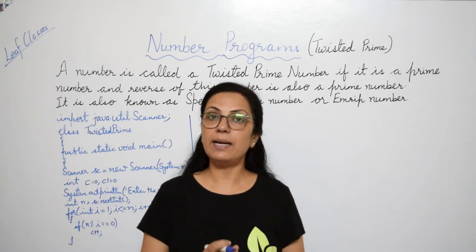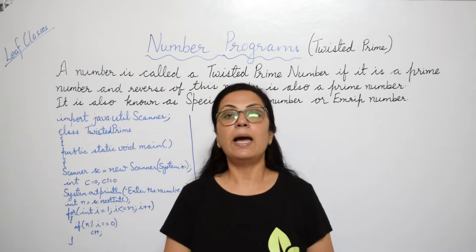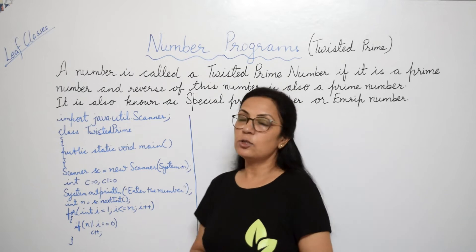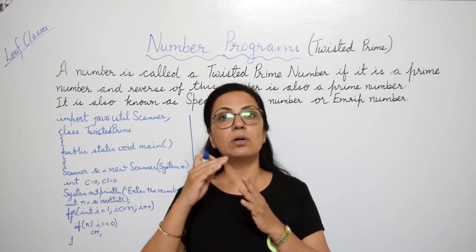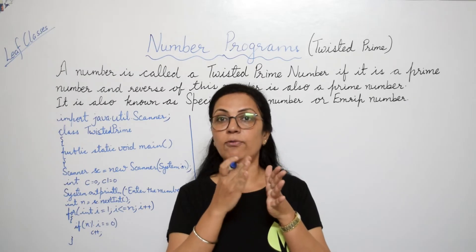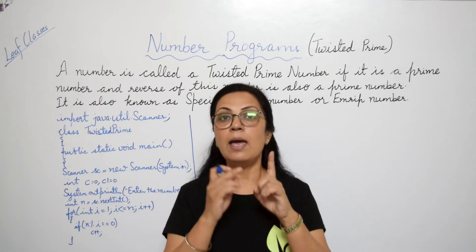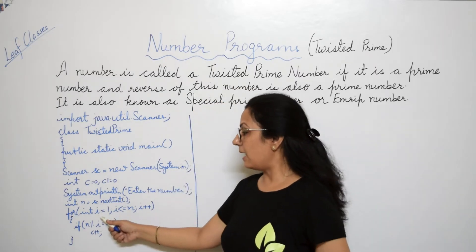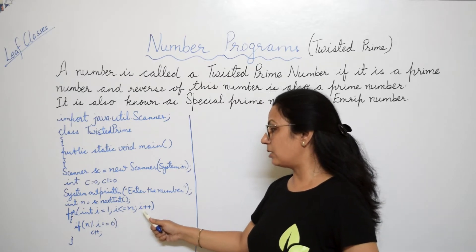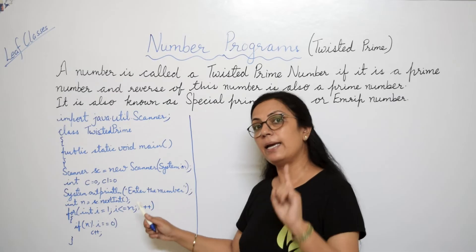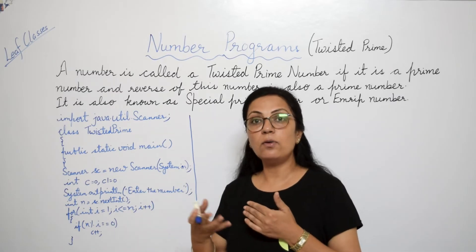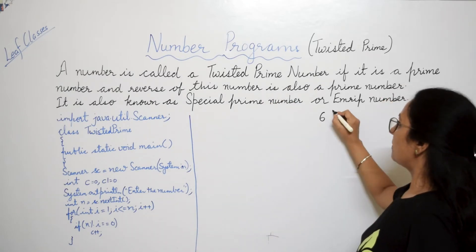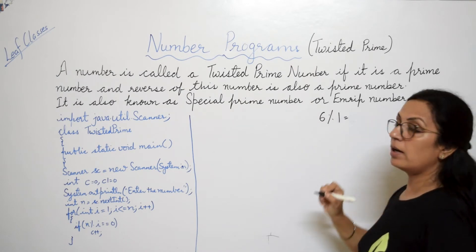The first step is to check whether the number entered by the user is prime or not, and for that we calculate the number of factors. The lowest limit of any factor is 1 and the highest limit is the number itself. So we take the loop: for(int i = 1; i <= n; i++). The loop runs from 1 to n. To check factors — for example, for 6 — we divide 6 by i and if the remainder is 0, then i is a factor.